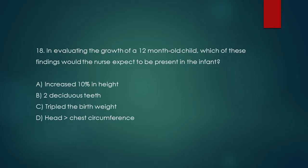Question 18. In evaluating the growth of a 12-month-old child, which of these findings would the nurse expect to be present in the infant? A. Increased 10% in height. B. Two deciduous teeth. C. Tripled the birth weight. D. Equal head and chest circumference.